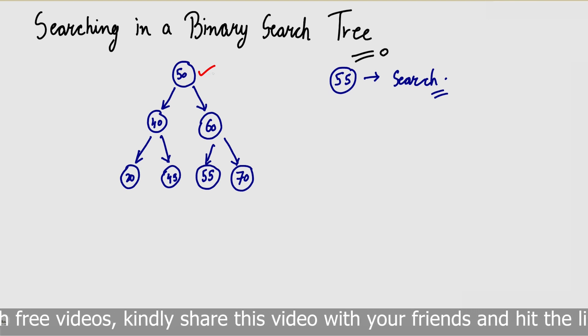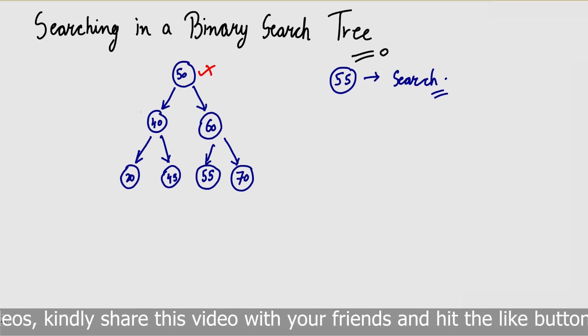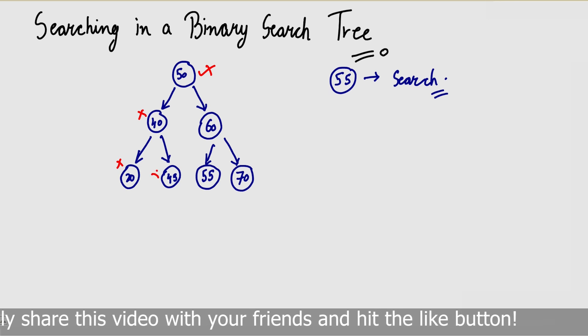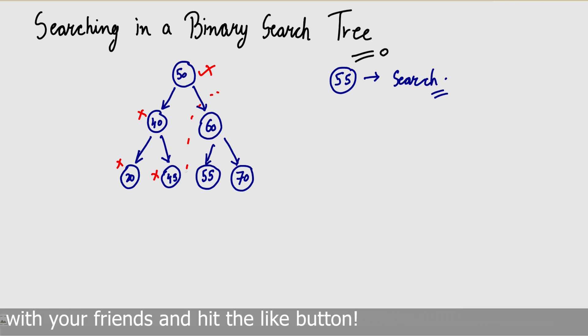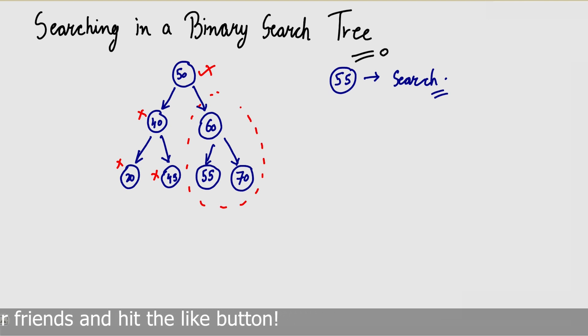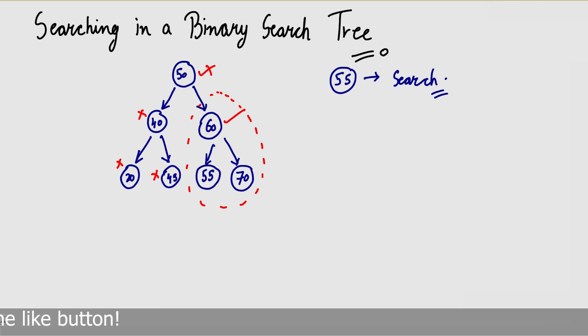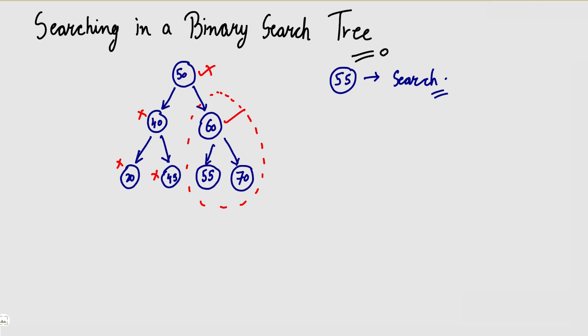I will now go into the right subtree. Here the node is 60, which is not 55. Is 55 bigger than 60? No, 55 is smaller than 60, so 55 is in the left subtree of 60. I will look there — yes, it is 55! We found 55 in the binary search tree.